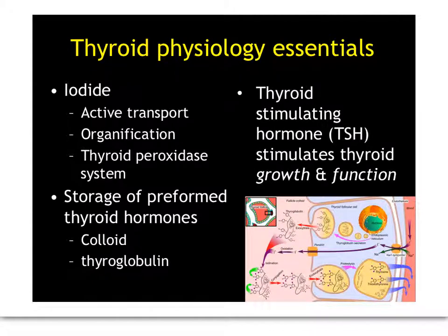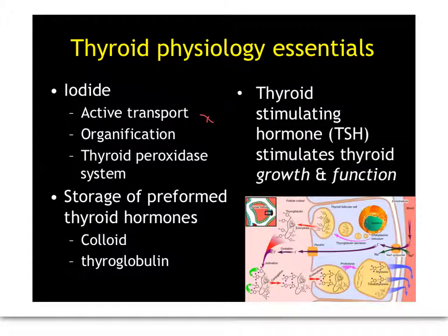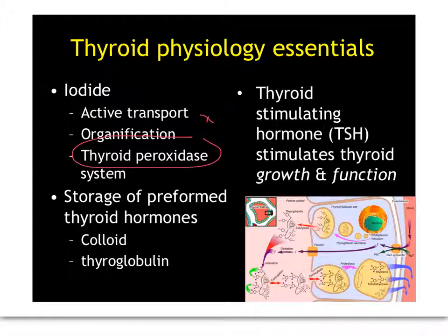Iodide is trapped in the thyroid by a process which is active — it's organic. Substances are made up of the amino acid tyrosine. Two tyrosines come together to form that in the thyroid, which then gets iodinated by this enzyme, thyroid peroxidase.